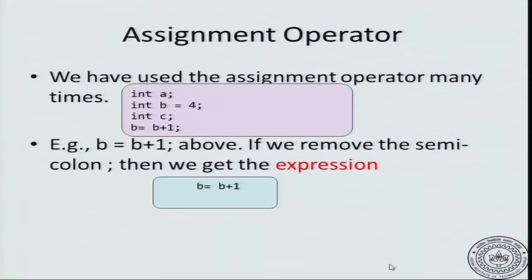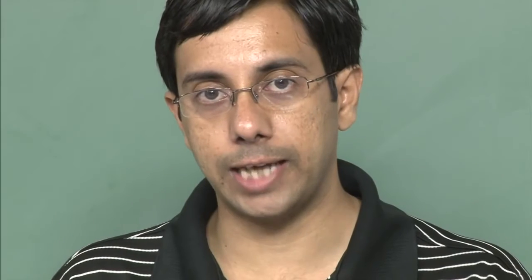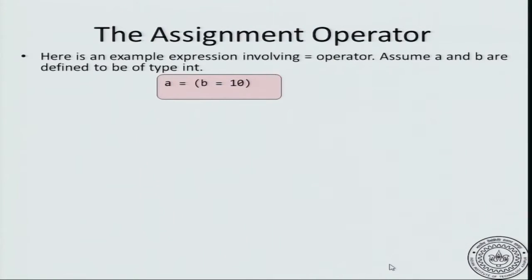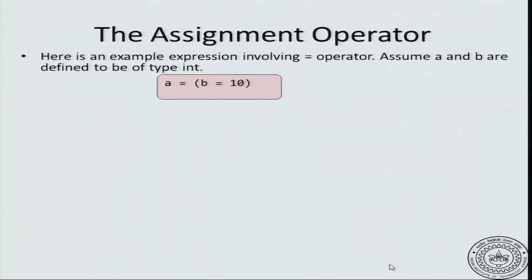We have used the assignment operation many times, and let us understand it in somewhat more detail. For example, consider the expression b equals b plus 1. If you remove the semicolon at the end, what you get is an assignment expression b equals b plus 1 without the semicolon. Now consider an expression like a equals, and then on the right hand side within parenthesis b equals 10. What does this do?